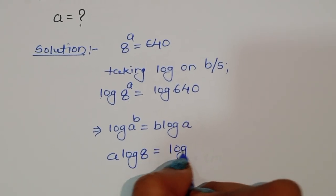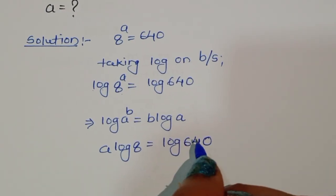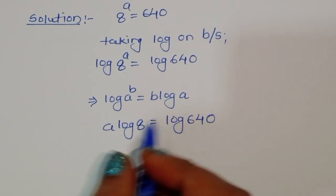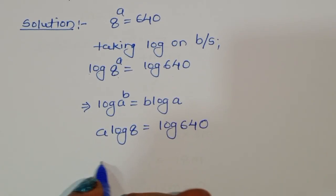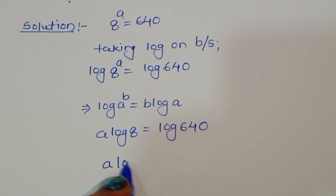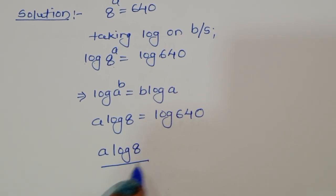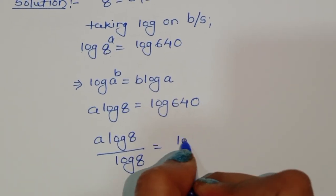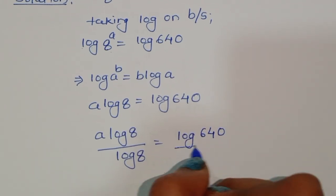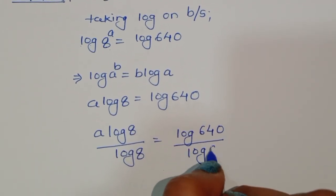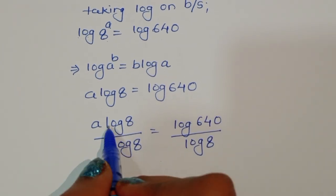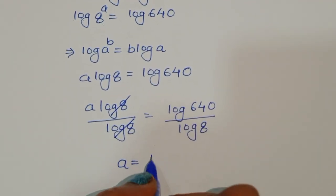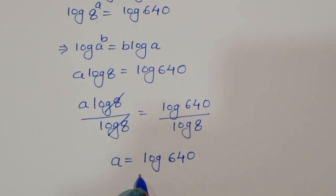So a times log of 8 is equal to log of 640. To find the value of a, we divide both sides by log 8. Then log 8 divided by log 8 cancels, giving us a is equal to log of 640 divided by log of 8.